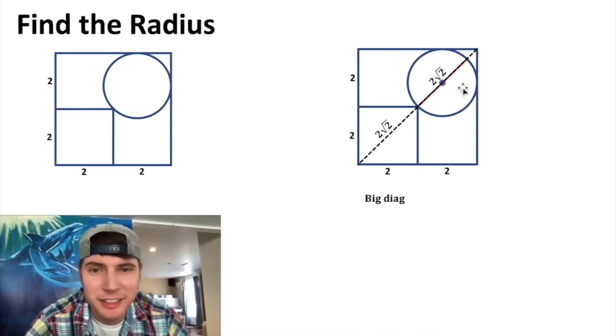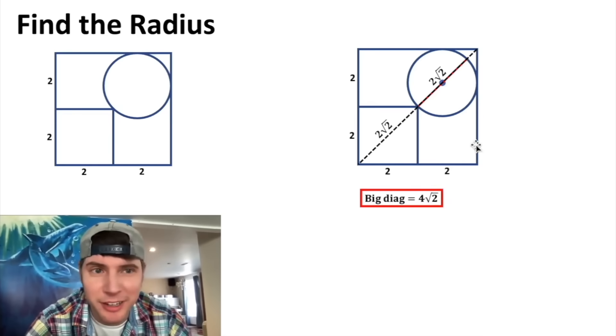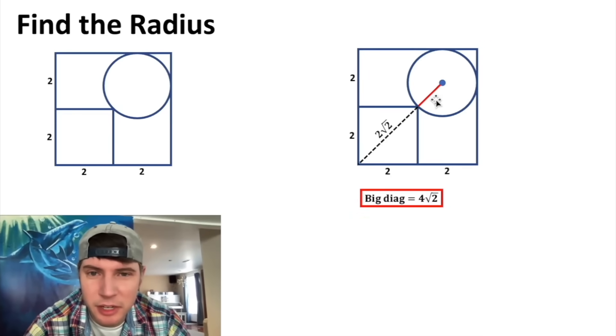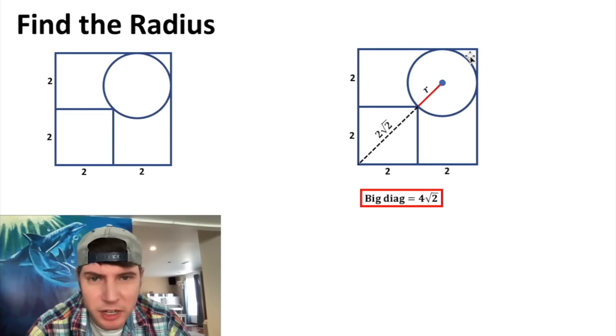So we can calculate the diagonal of the big square and it's going to be equal to the 2√2 plus the 2√2, which is just 4√2, and we can put a box around that. Let's clean this all up a little bit. And this right here is the radius, we'll call that r. This is what we're trying to solve for.